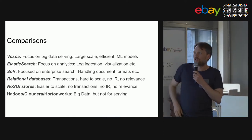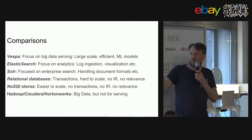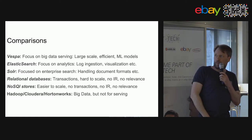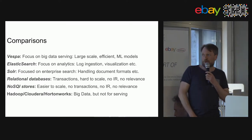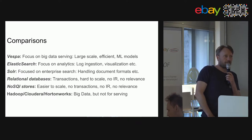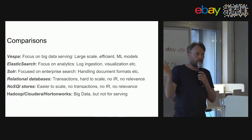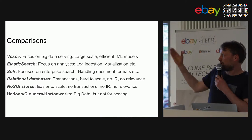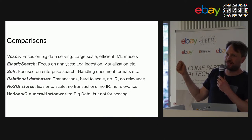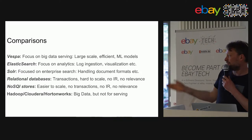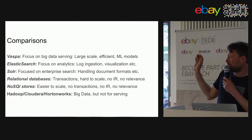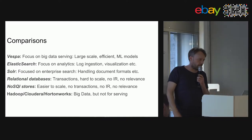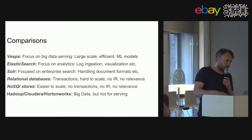Vespa's focus is big data serving: large scale, high availability, efficiency with many queries, bounded response times, and machine-learned models. ElasticSearch is probably the closest alternative, but its focus is more on analytics, ingesting logs and time-series data. Solr overlaps with Vespa's natural language search capabilities. Databases also slightly overlap, and Hadoop is complementary — it handles the offline piece that Vespa doesn't.